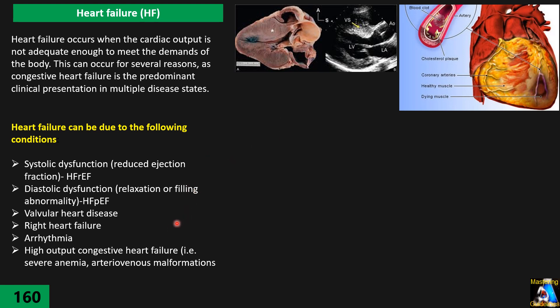The next group that can cause heart failure is valvular disease. At the top of them are severe MR, MS, and AS. In all those cases, at least at the early stage, at the severe level but early stage, the myocardial systolic and diastolic function can still be almost close to normal. But since forward output is defective, we have symptoms and signs of heart failure. The next one is right heart failure, which has specific and unique clinical features and causes — I will explain that in another lecture.